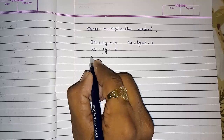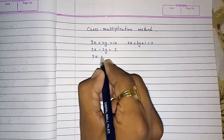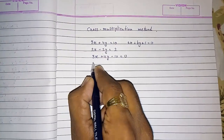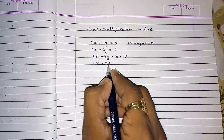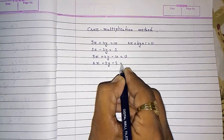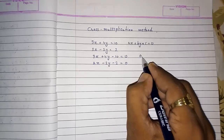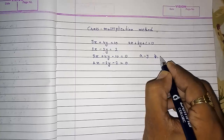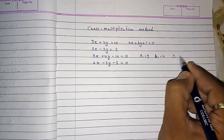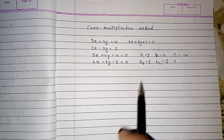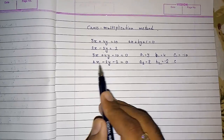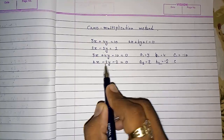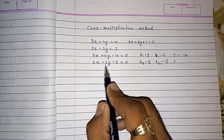We arrange the equations as: 3X plus 4Y minus 10 equals 0, and 2X minus 2Y minus 2 equals 0. Then we identify the coefficients: A1 equals 3, B1 equals 4, C1 equals minus 10, A2 equals 2, B2 equals minus 2. Students often forget to take the minus sign with the number.